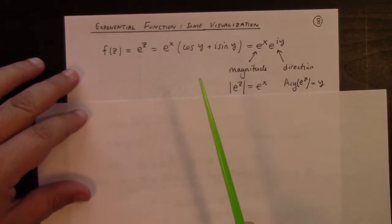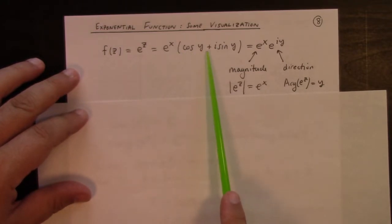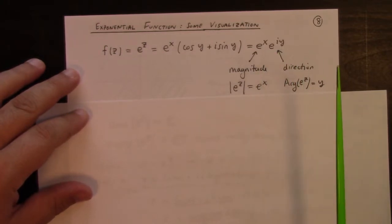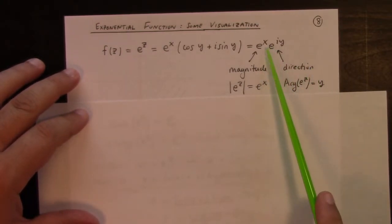We define the exponential function, the complex exponential function e to the z, by e to the x times cosine y plus i sine y, which is to say that it's e to the x times e to the i y. The way we should think about this formula is that e to the x is the magnitude, and e to the i y is the direction.